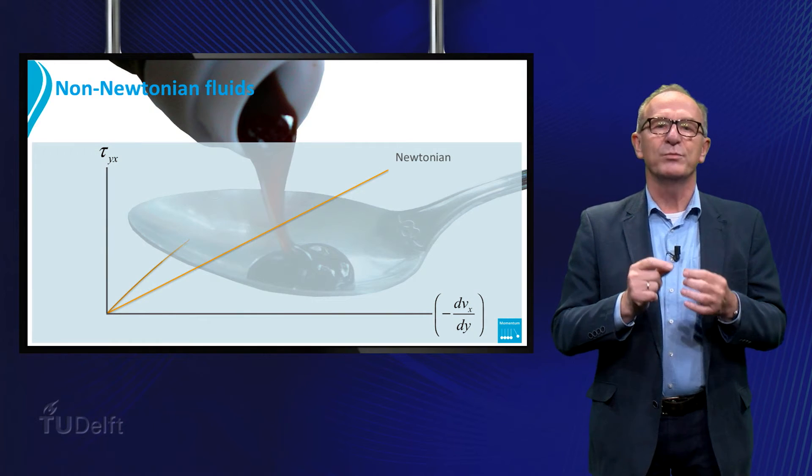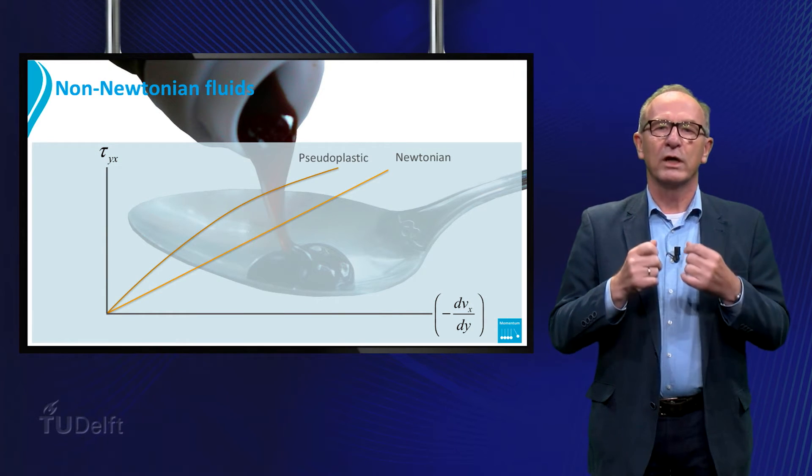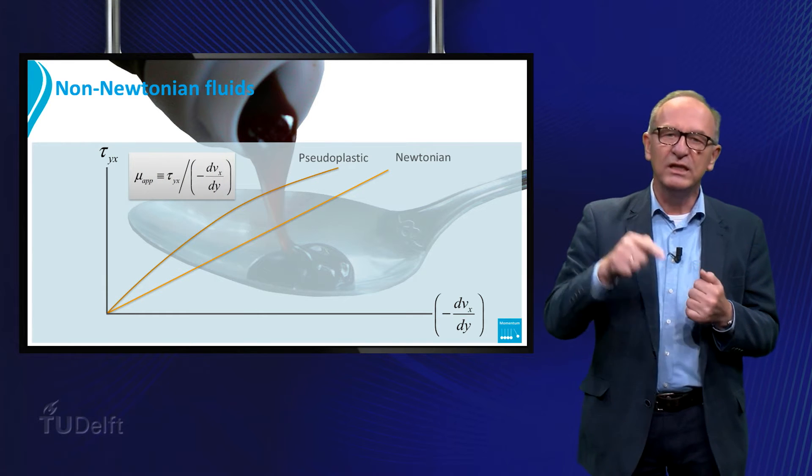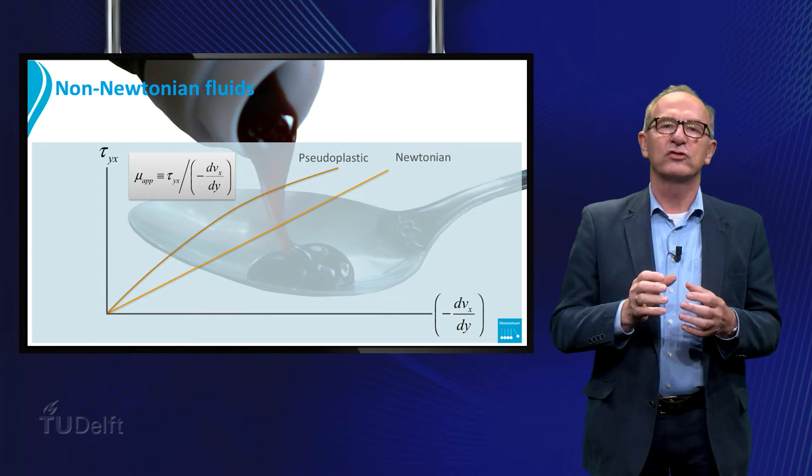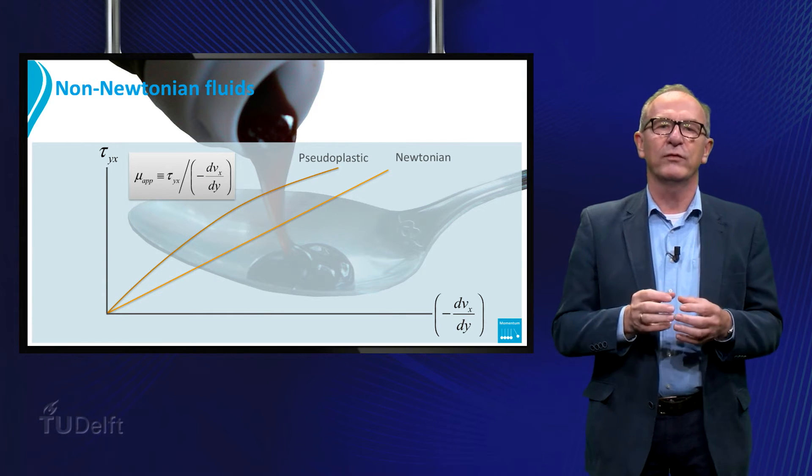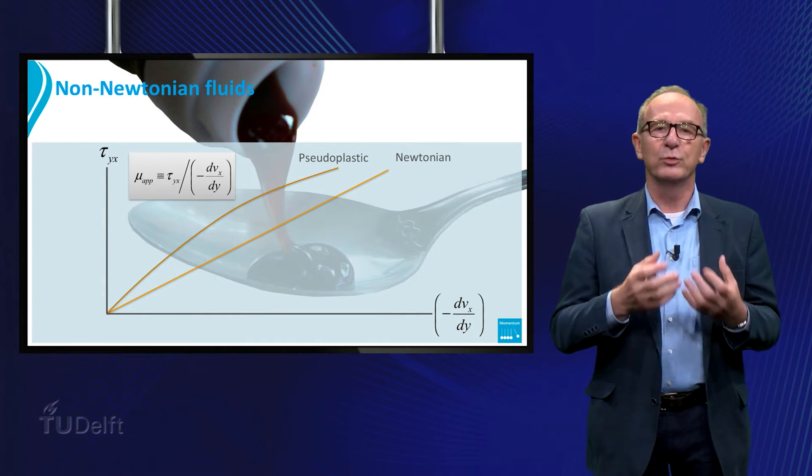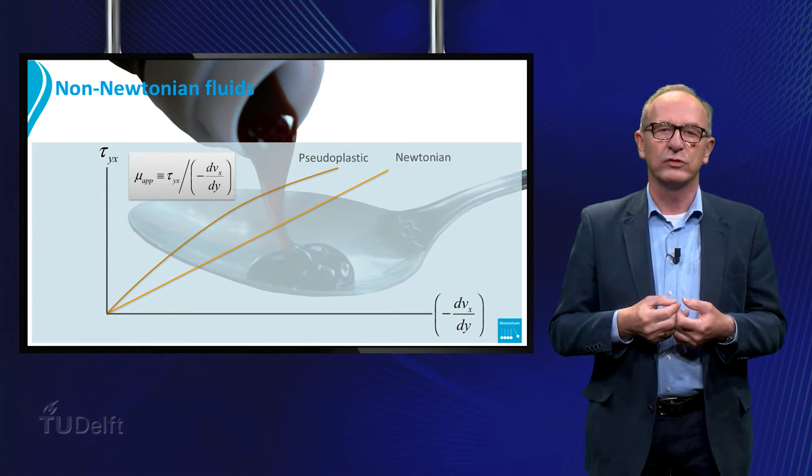The second line represents a category of fluids where the apparent viscosity decreases if the shear stress increases. These are the so-called pseudoplastic or shear-thinning fluids. Examples are soups and sauces, but also diluted aqueous polymer solutions.